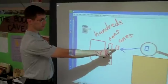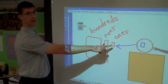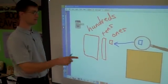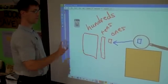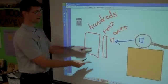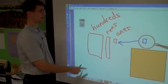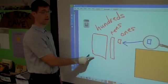You've heard of different place value names. You know the ones, which we normally show with a ones cube. You know the tens, which is a tens bar. And you know the hundreds, which would be ten of the tens bars.